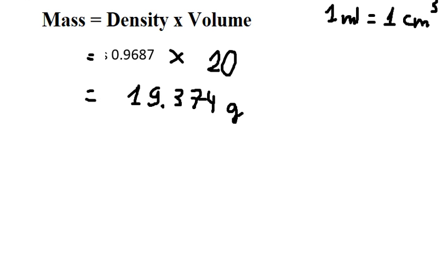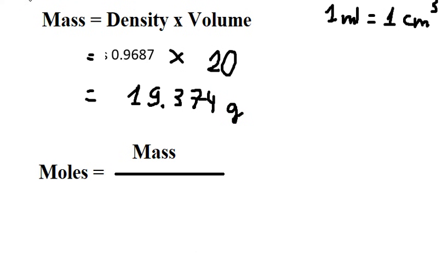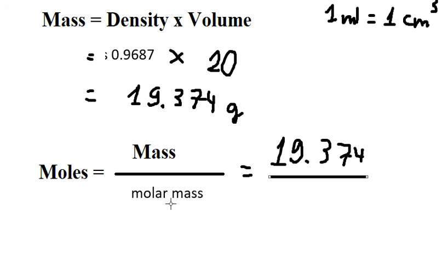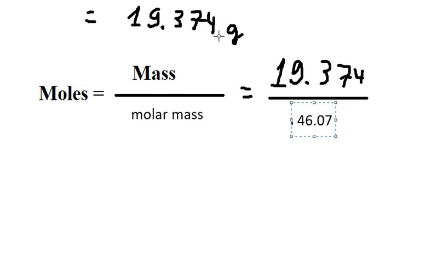After we have this one we can find the moles. So that should be the mass divided by the molar mass. The mass we just have is these numbers, the molar mass is these numbers. So we calculate and we have 0.4205 moles.